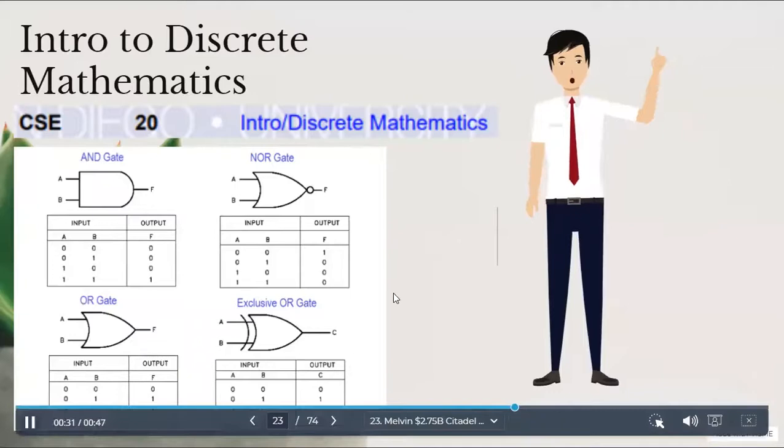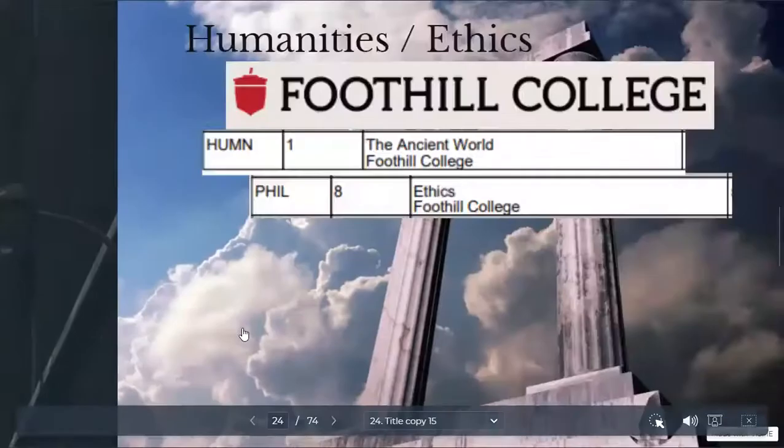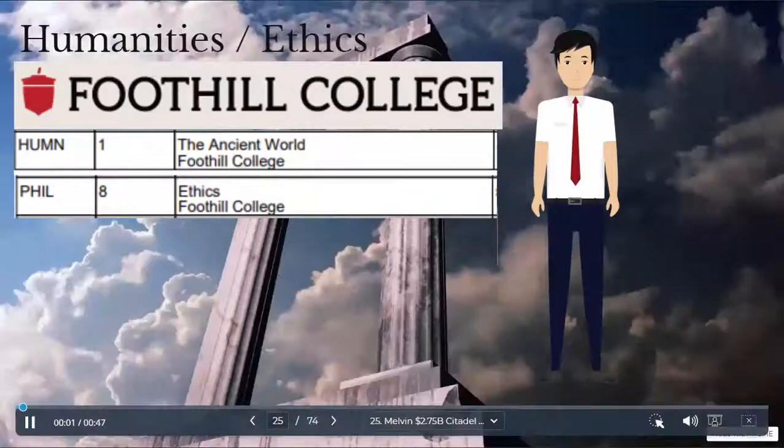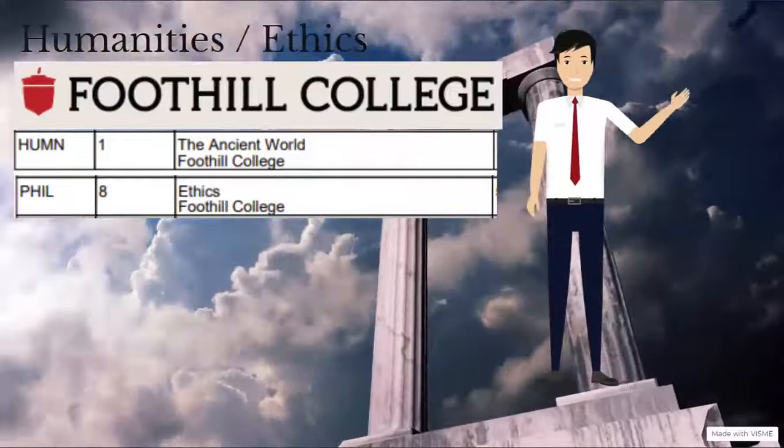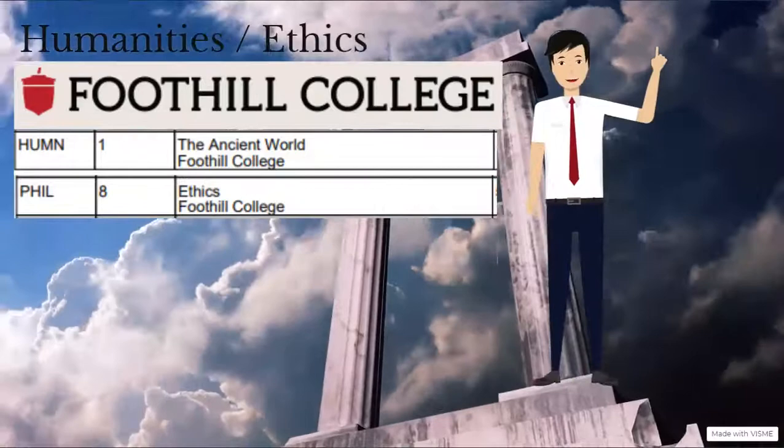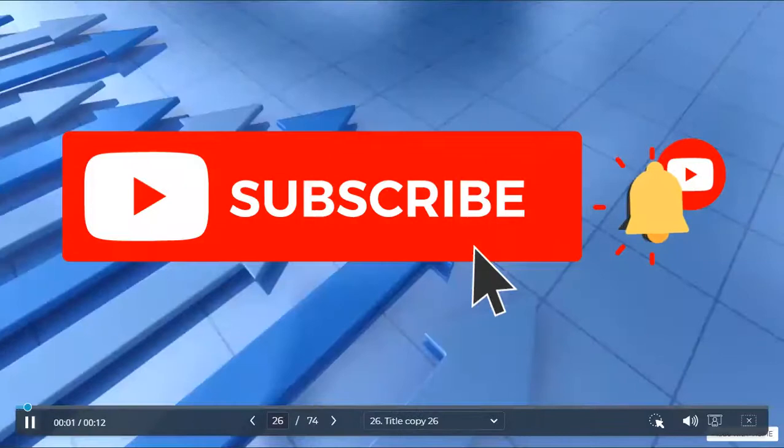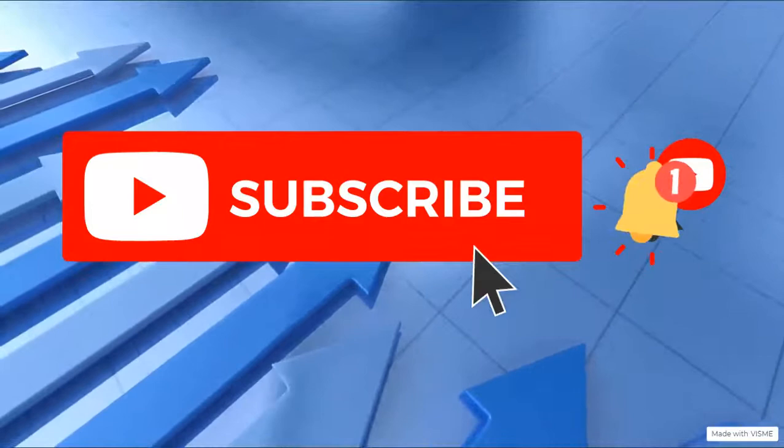So over that summer, I decided to get ahead in my GE requirements and took two classes. I took humanities and ethics courses that counted for two of the five courses for my humanities requirement. For context, I was able to take up to two of the five humanities courses online at a community college. So after some research, I decided to take these courses with some friends at a community college called Foothill College. I took these courses online from home, which in retrospect was a precursor to my last quarter spent studying at home. By the way, be sure to hit the subscribe button and turn on bell notifications to stay up to date with the latest videos on data science, machine learning, and college and career advice.